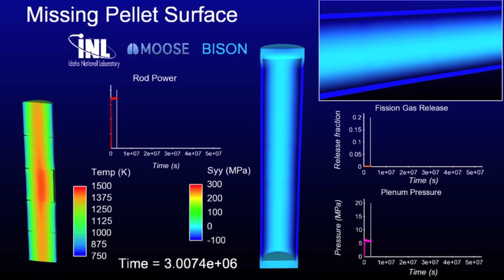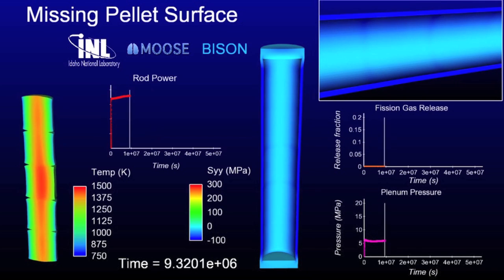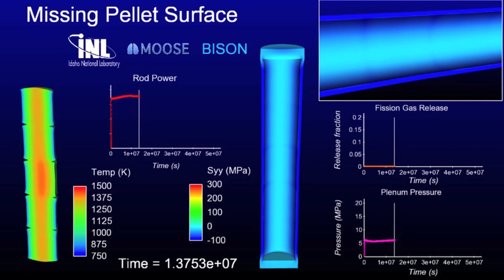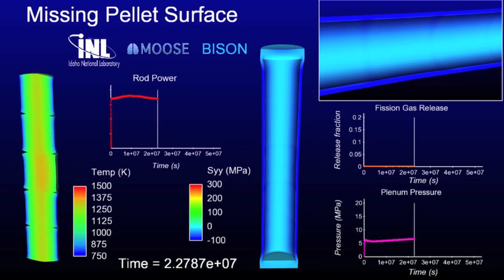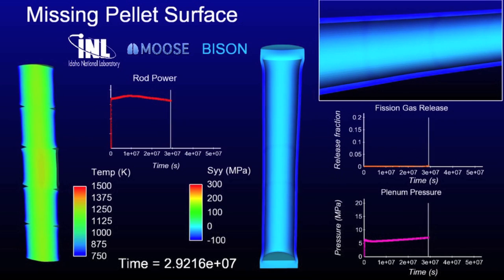It's going to cause a high stress state in the cladding in that same area just due to that missing surface there. You can see the pellets warm up and then they densify. Then later on the pellets actually swell back out because there's fission products building up inside of them.